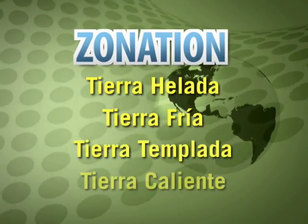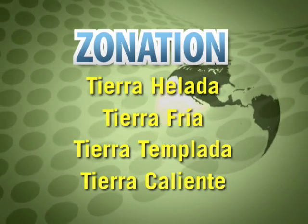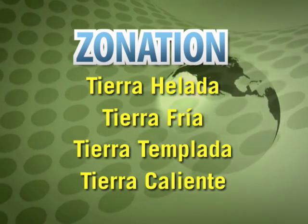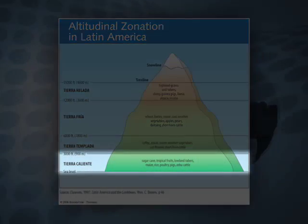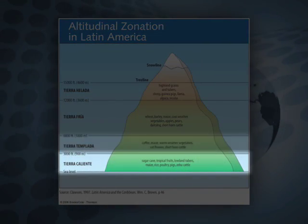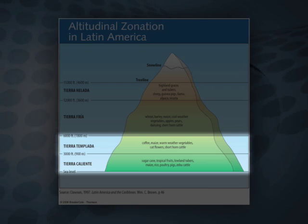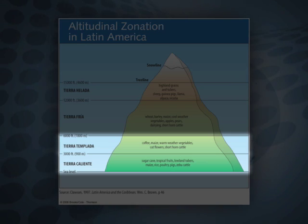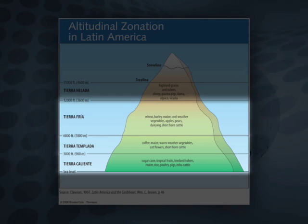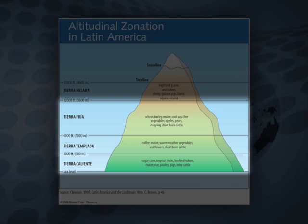Four environmental zones are associated with these temperature changes due to elevation. It is important that you identify the names and types of agriculture associated with each zone. As you can see, the Tierra Caliente, or hot land, and the Tierra Templada, or cool land, are associated with plantation-style agricultural crops, such as sugarcane and coffee. The Tierra Fria, or cold land, is associated with colder weather grains, such as wheat.